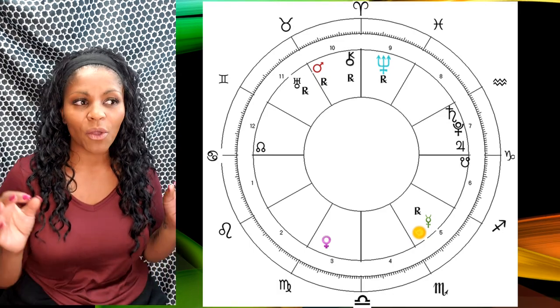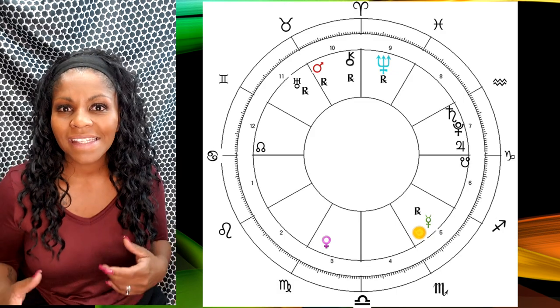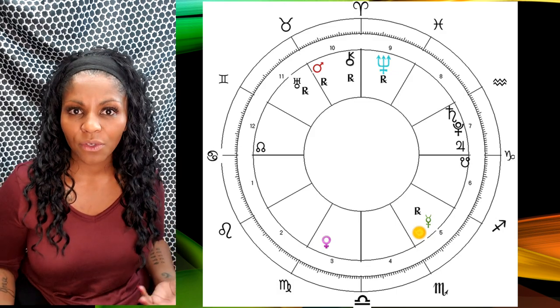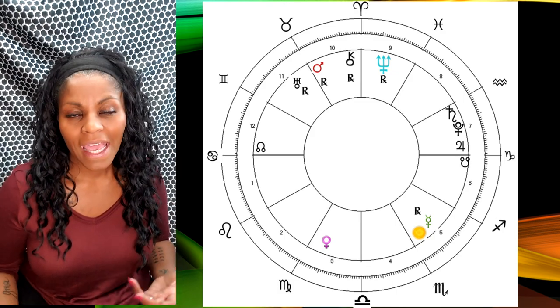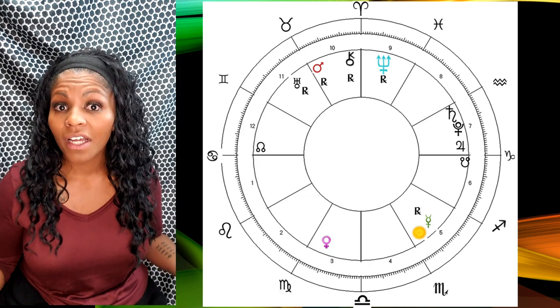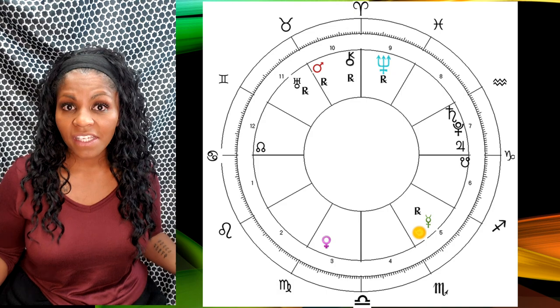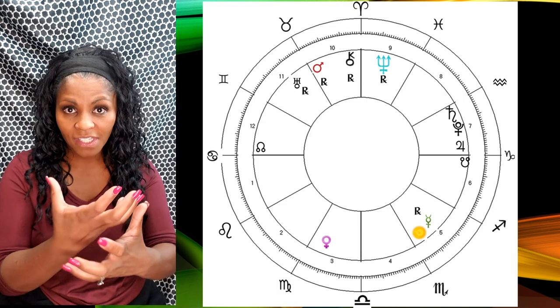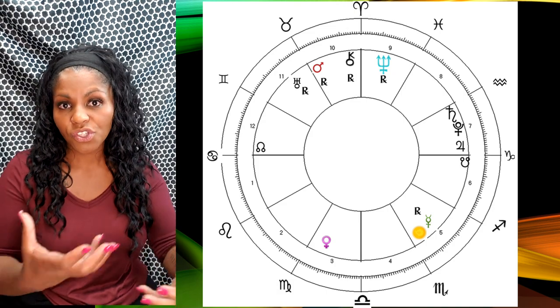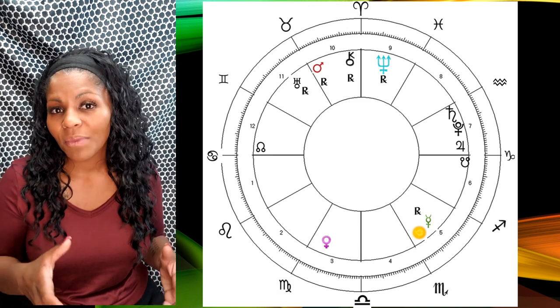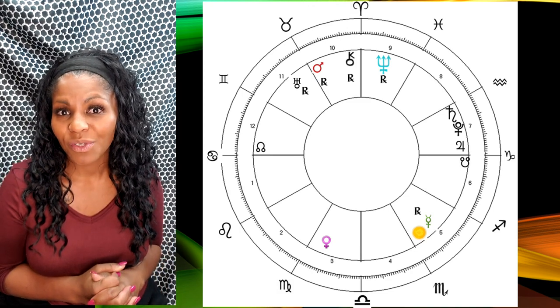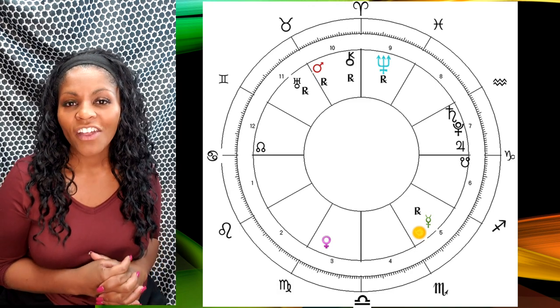On the 24th we actually have Venus trine Saturn and I wanted to put this in here because this is a great day. This is a great energy to make a commitment and have it be long lasting. So where's Venus, where's Saturn in your chart? Look at these two areas because if you're making decisions that have things to do with those two housing areas, whatever you make as a long-term commitment here can actually be very, very good.